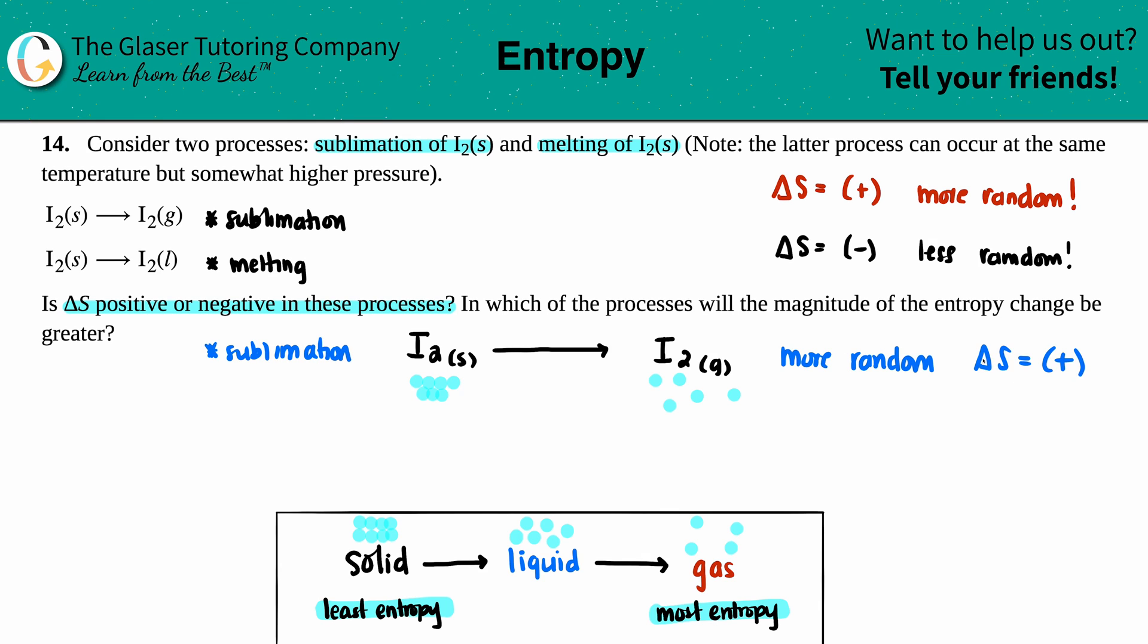Okay, let's do the same thing for the next one. The next one is melting. So that's I₂ of solid and I'm going to I₂ of a liquid. This is melting.